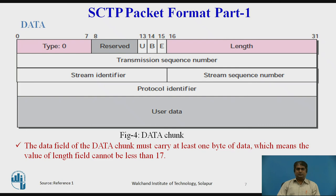The user data field carries the actual user data. SCTP has specific rules: no chunk can carry data belonging to more than one message, but a message can be spread over several data chunks. This field cannot be empty — it must have at least one byte of user data. If the data cannot end at a 32-bit boundary, padding must be added.